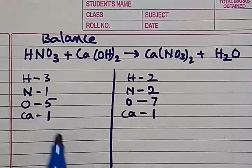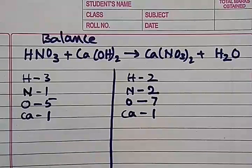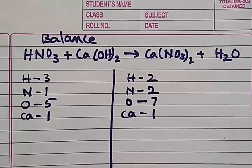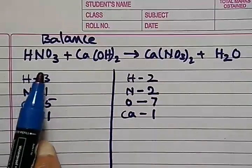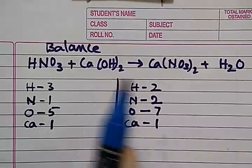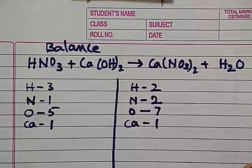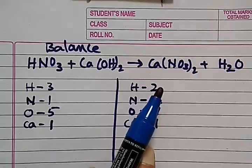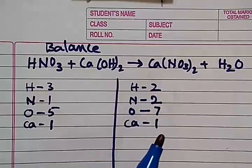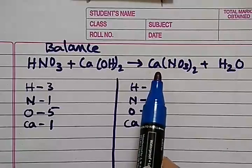So for balancing equation we should take the molecule which is having maximum number of atoms. So let us take this. This has got more number of atoms. Calcium is already here, then we will take calcium is already balanced.